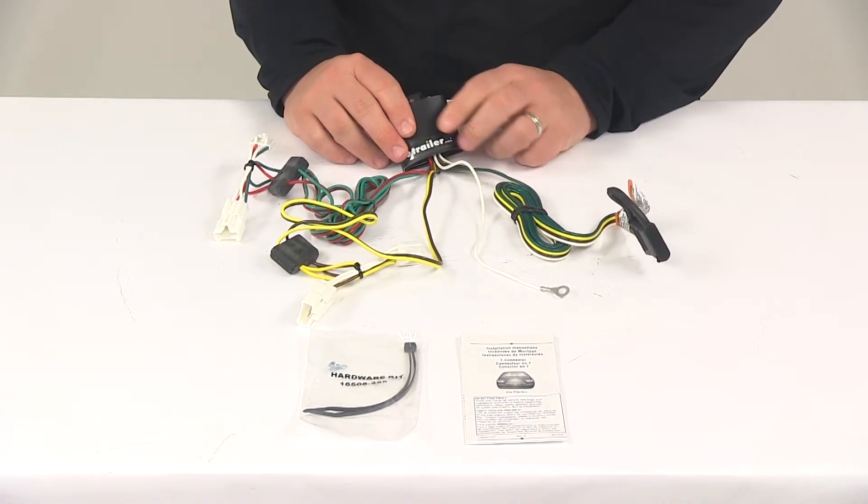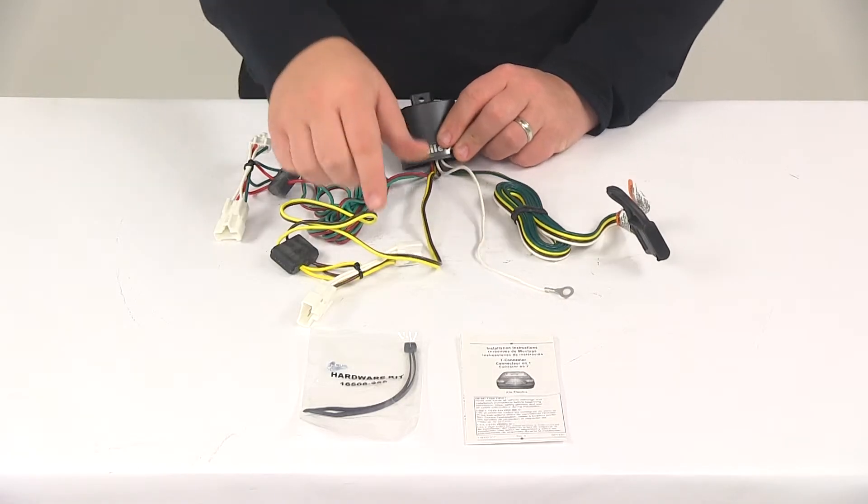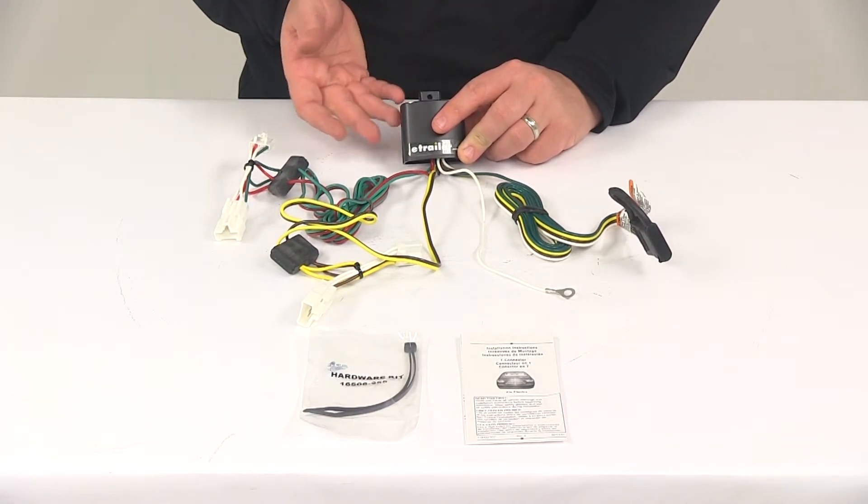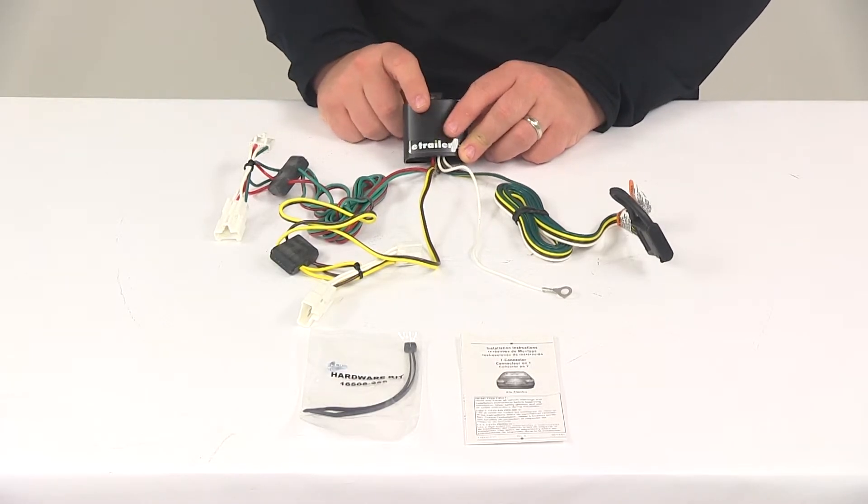Then you'll need to mount the converter box. It has a mount hole on it so you could use a screw to get it mounted, or you could use a zip tie to secure it, or you could apply some adhesive tape to the back of it. Multiple options when it comes to mounting the converter box.